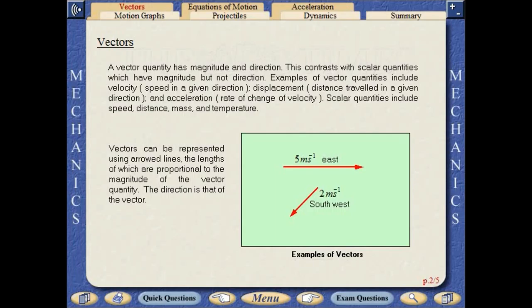Vectors can be represented using arrowed lines, the lengths of which are proportional to the magnitude of the vector quantity. The direction is that of the vector.